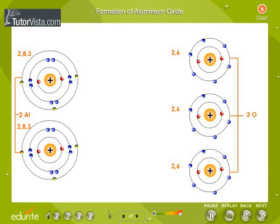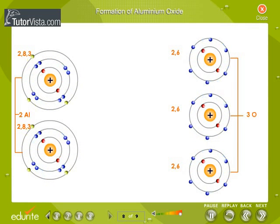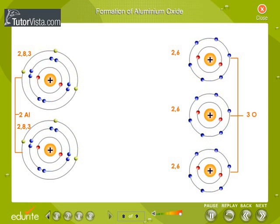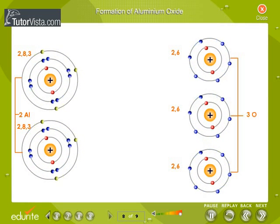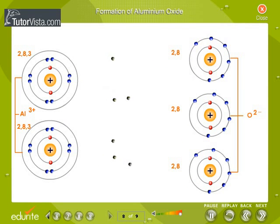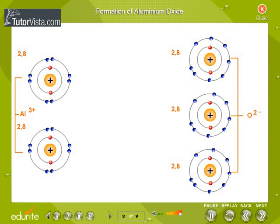Formation of aluminium oxide. Aluminium, whose atomic number is 13, tries to lose its 3 valence electrons to attain the octet state. 2 aluminium atoms lose a total of 6 electrons. Oxygen, whose atomic number is 8, has 6 electrons in the valence shell. It attracts 2 electrons from aluminium and attains the stable octet state. Thus, 3 oxygen atoms attract the 6 electrons lost by 2 aluminium atoms.